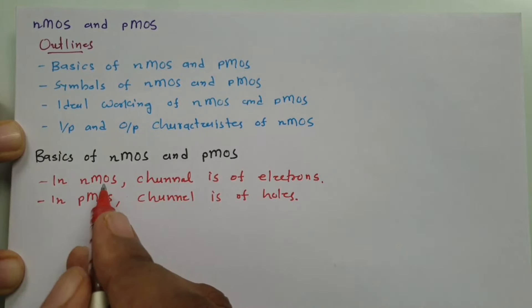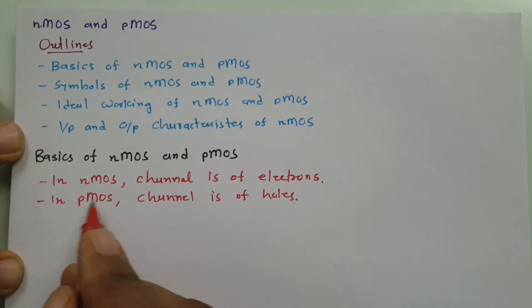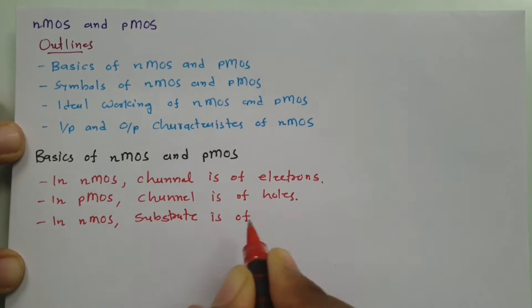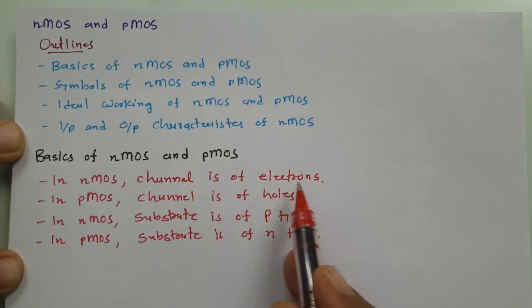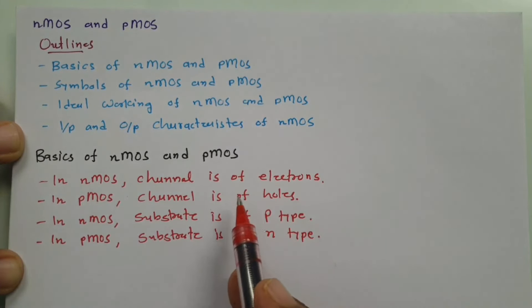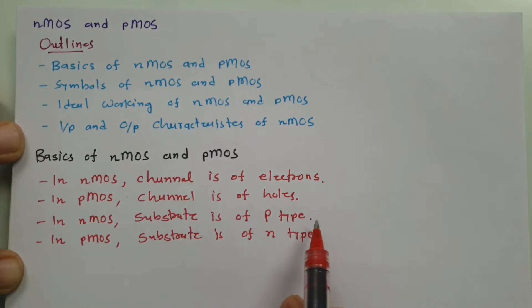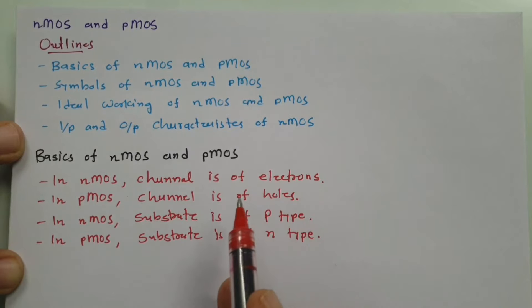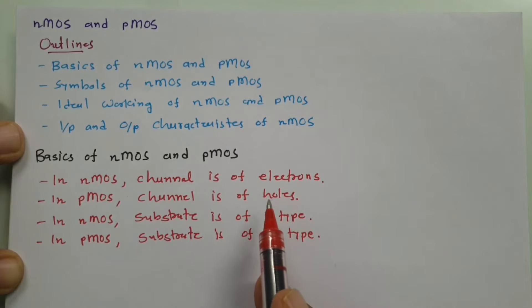In NMOS, the substrate will be of P-type material, and channel formation will be there with electrons. In PMOS, the substrate will be of N-type material, and channel formation will be there with holes. The channel gets formed in the substrate — in NMOS, the P-type substrate forms a channel with electrons, and in PMOS, the N-type substrate forms a channel with holes.